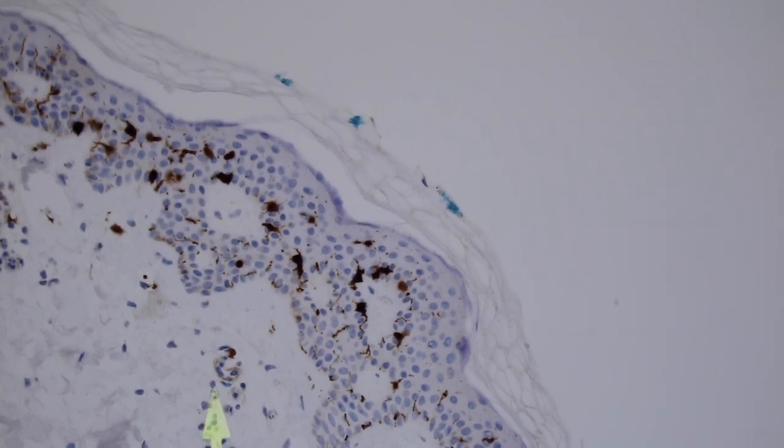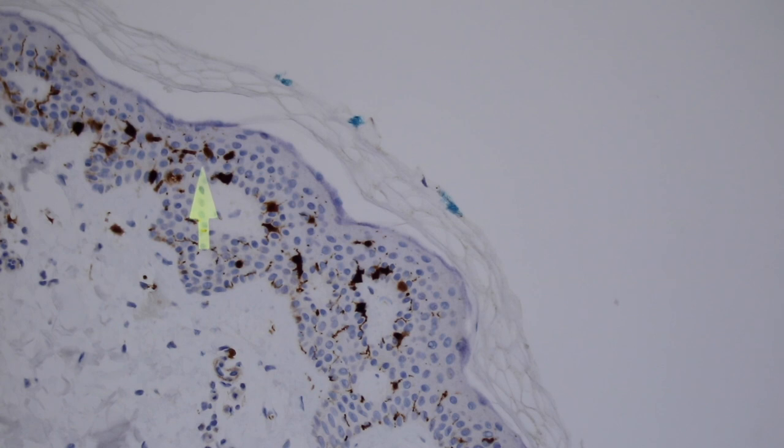So you have S100 positive melanocytes down at the basal layer, and then also Langerhans cells, which are antigen processing cells, up there in the mid portion of the epidermis.